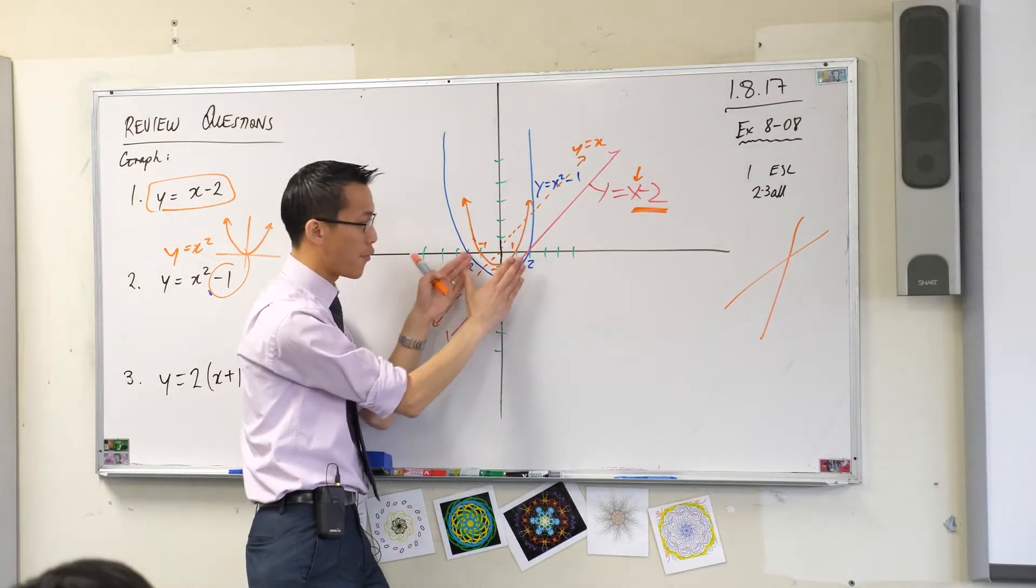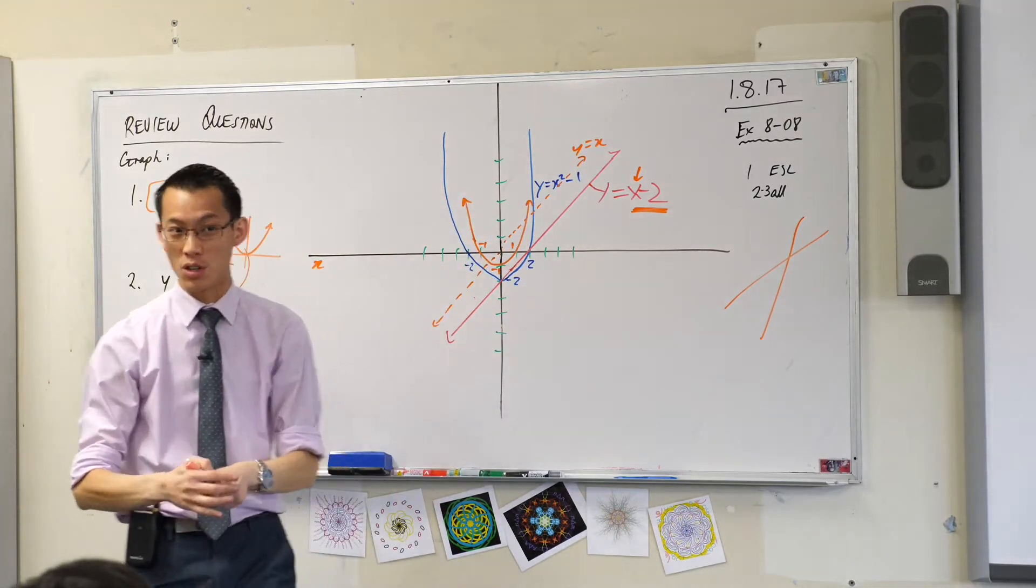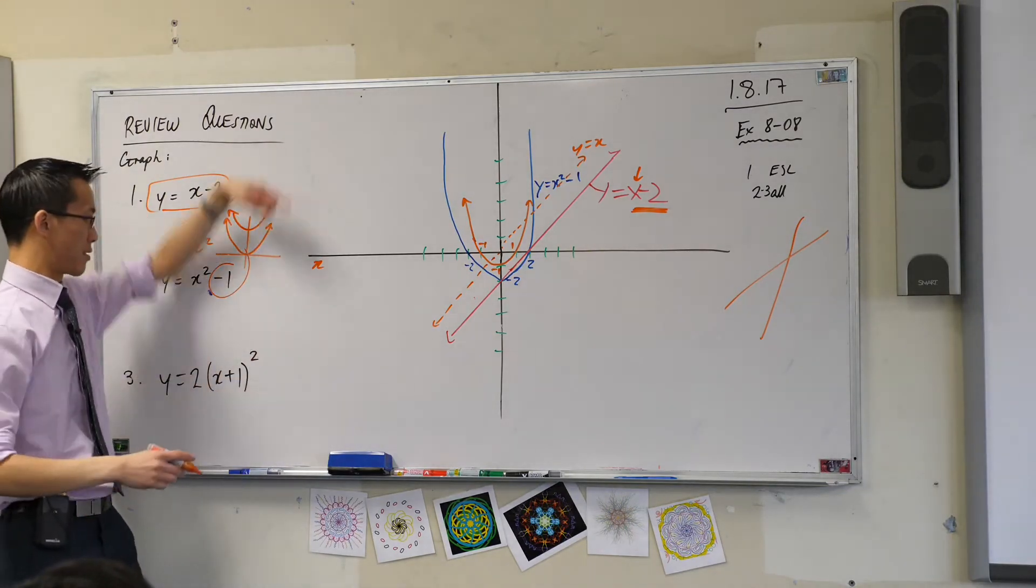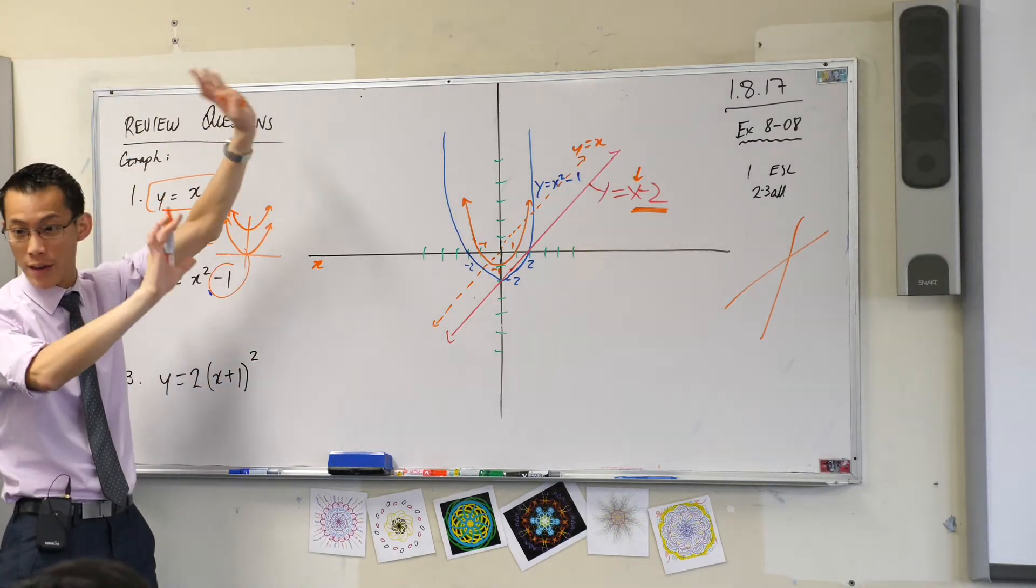Do you notice that? And if I move it far enough, you don't get x-intercepts at all. Like, look at this guy. See that? If I went x squared plus like 100, it would be too far away. It would never touch.